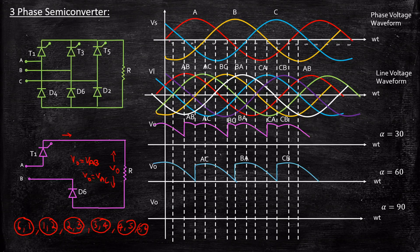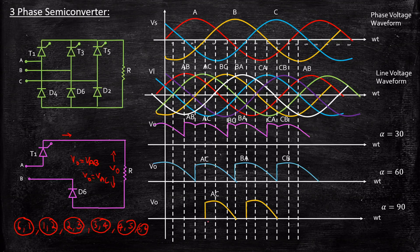When alpha equals 90°, the waveform starts at 30 plus 90 equals 120 degrees. The output follows line voltage Vac, then drops to zero for a period. The next thyristor T3 is triggered at 120 plus 120 equals 240 degrees. Since no thyristor is triggered during that interval and no forward-biased diode maintains conduction, the output voltage equals zero. Then the waveform follows Vba when T3 and D4 conduct, followed by Vcb when T5 and D6 conduct.